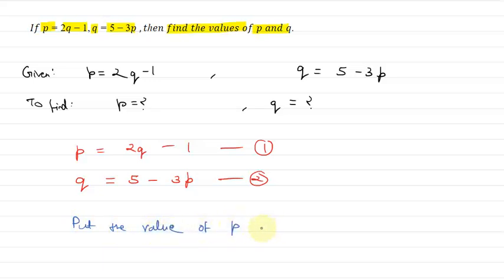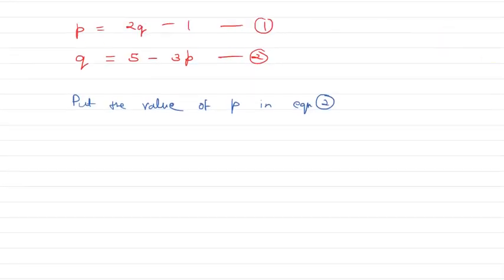Put the value of p in equation number 2. So we get q equals 5 minus 3 times (2q minus 1). Therefore q equals 5 minus 3 times 2q minus 1.